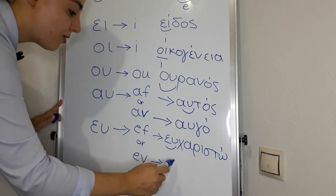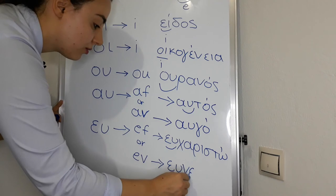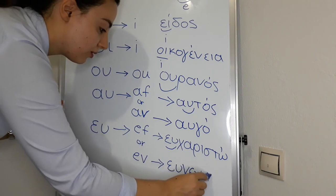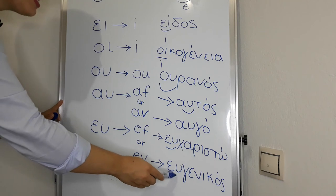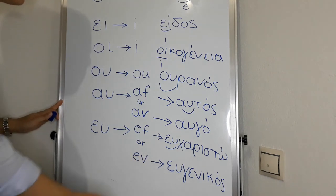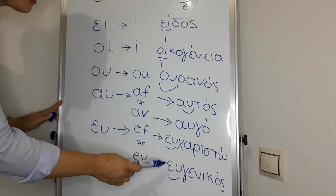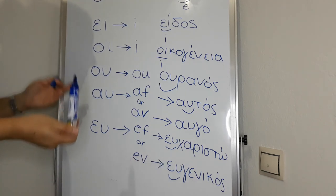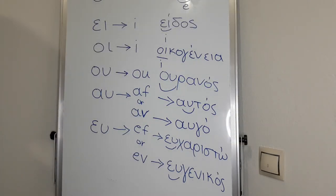Look at the Greek word eucharisto, thank you. In the word eugenikos, this one is pronounced like ev. Eugenikos. In English it means kind. You are very kind. Eisai poly eugenikos.